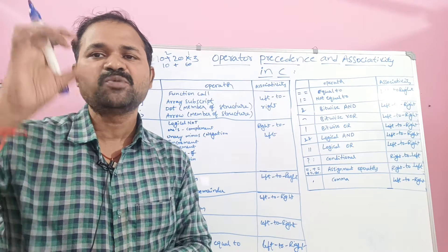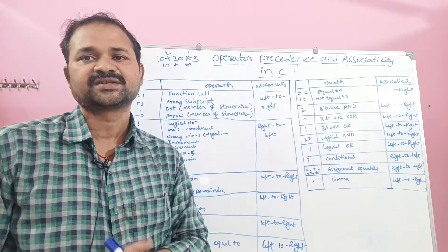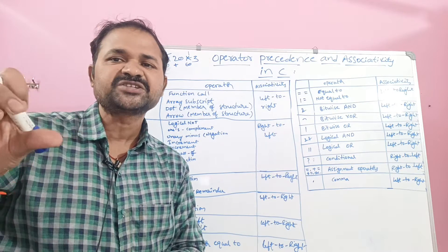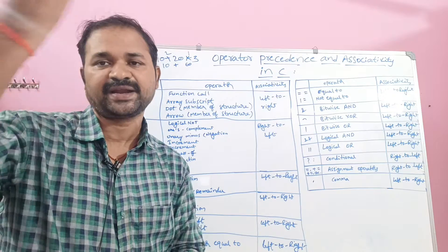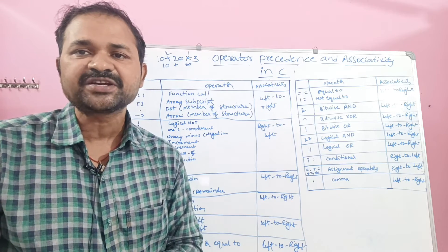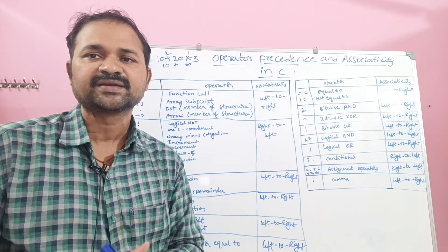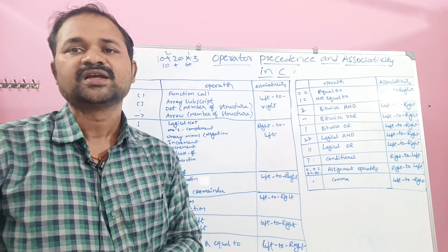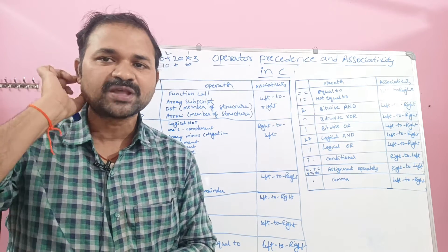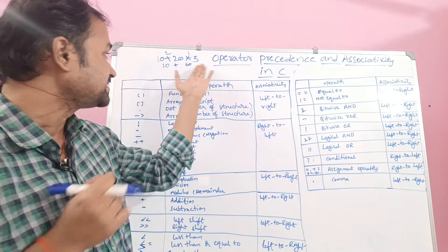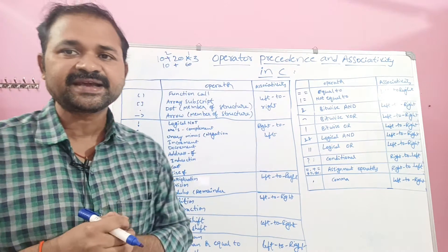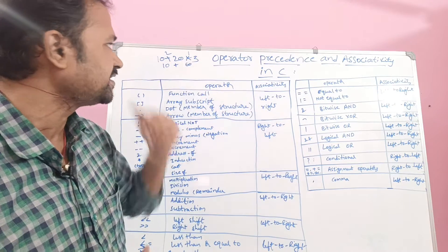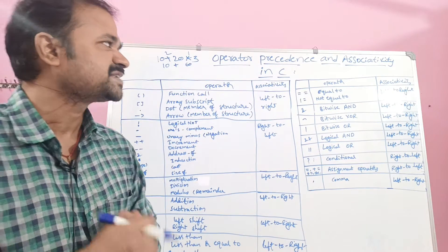So that is about precedence. Precedence is mainly useful if an expression contains more than one operator — it decides which operator should be executed first based upon the priority. In this expression, star operator has higher precedence than plus, so first star will be executed and then plus will be executed.